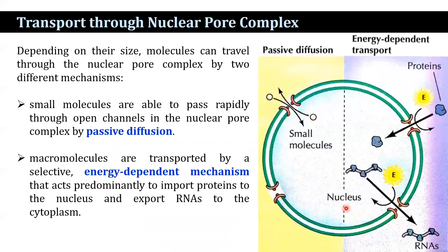Depending on their size, molecules can travel through the nuclear pore complex by one of two different mechanisms: passive diffusion or energy-dependent transport. Smaller molecules, generally less than 20 kilodaltons, pass rapidly across the nuclear envelope in either direction — cytoplasm to nucleus or nucleus to cytoplasm. These molecules diffuse passively through open aqueous channels that are approximately 10 nanometers in diameter in the nuclear pore complex.